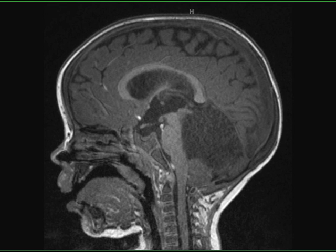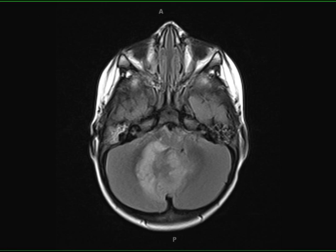This is a case of Lermit-Duclos disease, also known as dysplastic cerebellar gangliocytoma. The images demonstrate an infiltrative T1 hypo-intense, T2 FLAIR hyper-intense lesion centered within the vermis and right greater than left parasagittal cerebellum, with associated gyral swelling and effacement of the fourth ventricle.